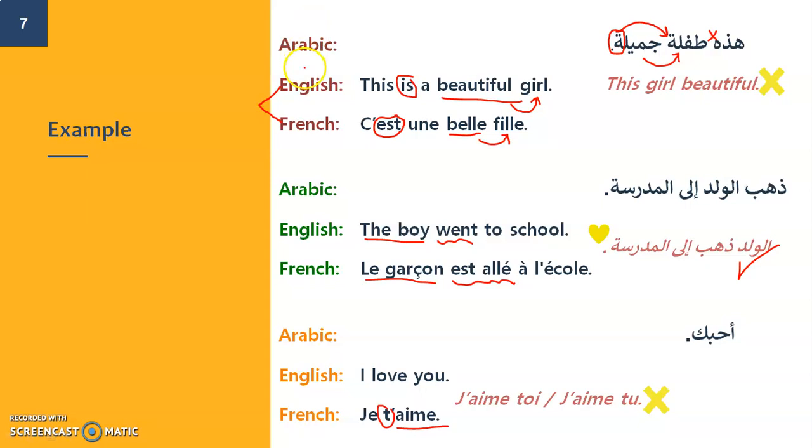You are French, you want to learn Arabic, where are the areas of differences, where are the areas of similarities? They would compare and predict how the learner would respond to the learning process. Same if you are an Arab wanting to learn French, et cetera.